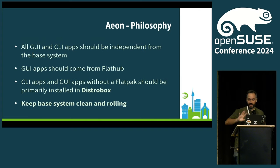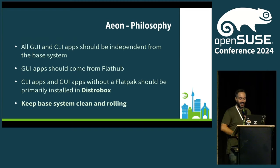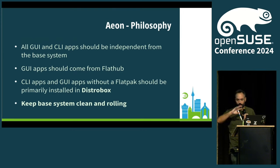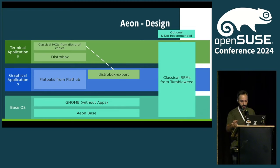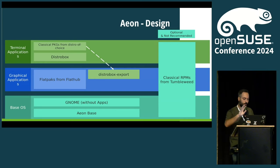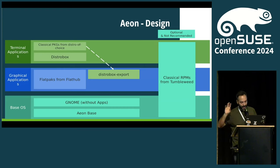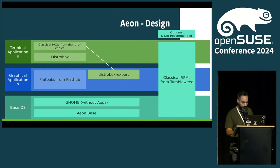The philosophy of Aeon is: leave the base system clean and alone. CLI apps should be in a container. GUI apps should be in a Flatpak — they come from Flathub, so the whole community works on them. There is a good separation of concerns. So you have this base OS based on MicroOS with GNOME without any apps, because everything is added as Flatpak by default. You can still use classic RPMs for very edge cases — it's not advised — but graphical applications from Flatpaks and terminal applications with DistroBox.